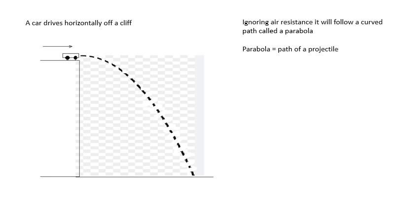Imagine a car drives horizontally off a cliff. I don't suggest you do this, but imagine it, there's a car driving horizontally off a cliff. Now, ignoring air resistance, we'll talk about air resistance later, it will follow a curved path and that path is called a parabola.